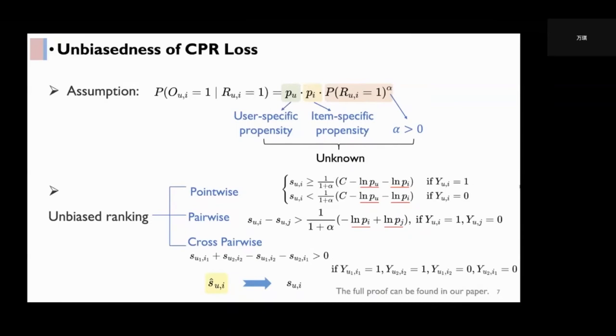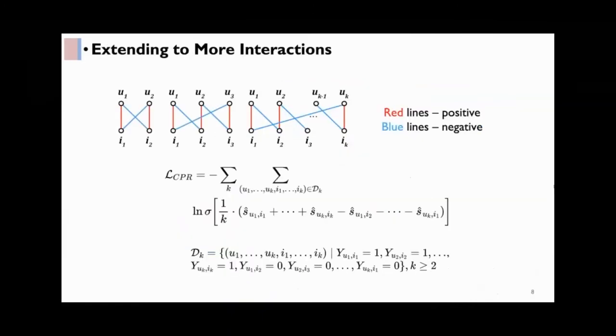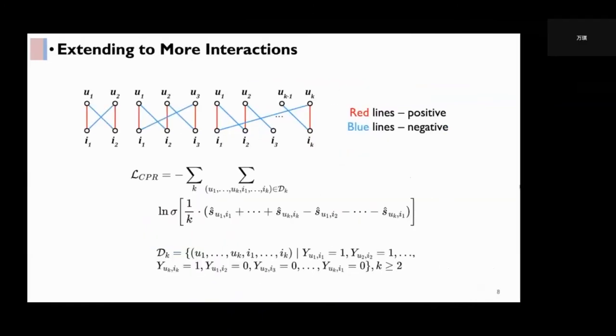So the resultant recommendations of CPR would be unbiased. The CPR loss we just talked about only used two observed interactions to form a training sample. We now extend it to K interactions. These graphs from left to right illustrate the composition of a training sample with 2, 3, and K interactions respectively.